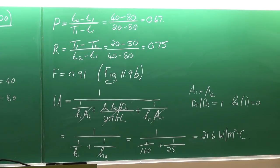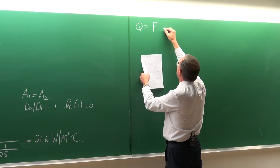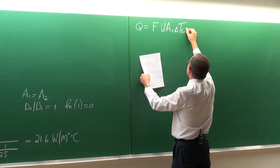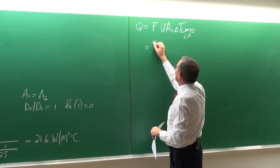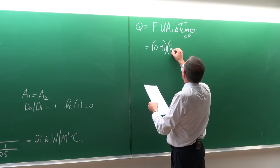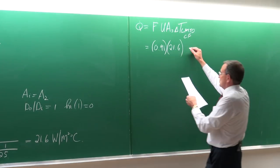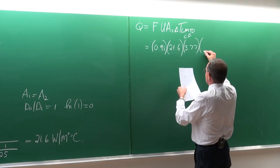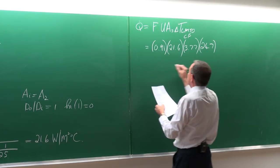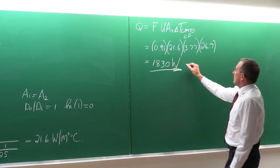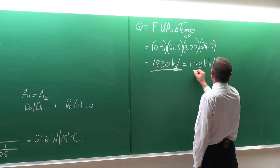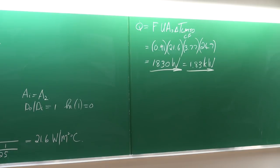We now have everything to determine the heat transfer rate: Q = F × U × A_s × LMTD_CF = 0.91 × 21.6 × 3.77 × 24.7 = 1830 W, or approximately 1.83 kW. That was the first part of the problem — the heat transfer rate without fouling.